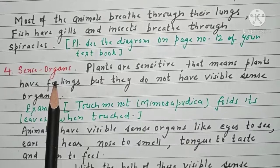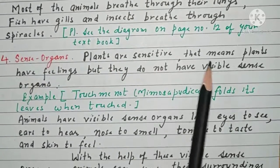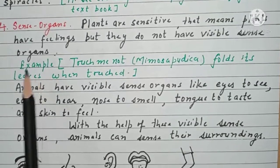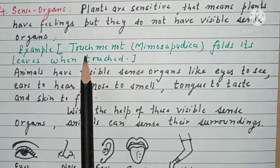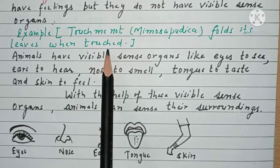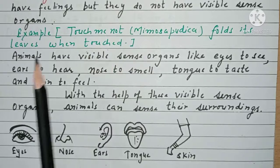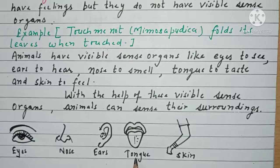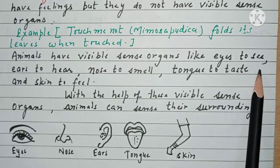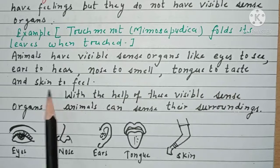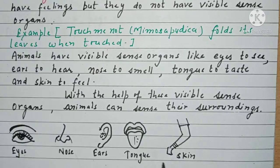Now we will discuss about the sense organs. The most common example is a plant called touch-me-not, scientific name Mimosa pudica. It folds its leaves when it is touched, and is commonly known by the name chhoi-mui. Animals have visible sense organs like eyes, nose, ears, tongue and skin. Eyes are to see, ears are to hear, nose to smell, tongue to taste, and skin to feel. With the help of these visible sense organs, animals are able to sense their surroundings.